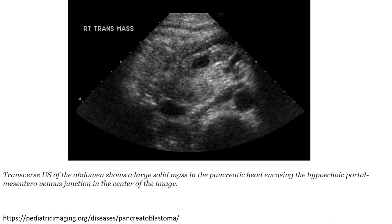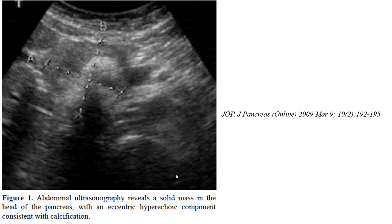This is a case of pancreatoblastoma on ultrasound, where it shows a large solid mass in the pancreatic head encasing the hepatoportal-mesenteric venous junction in the center of the image. This is also a case of pancreatoblastoma on ultrasound, where it shows a solid mass in the head of the pancreas with an eccentric hyperechoic component consistent with calcification.